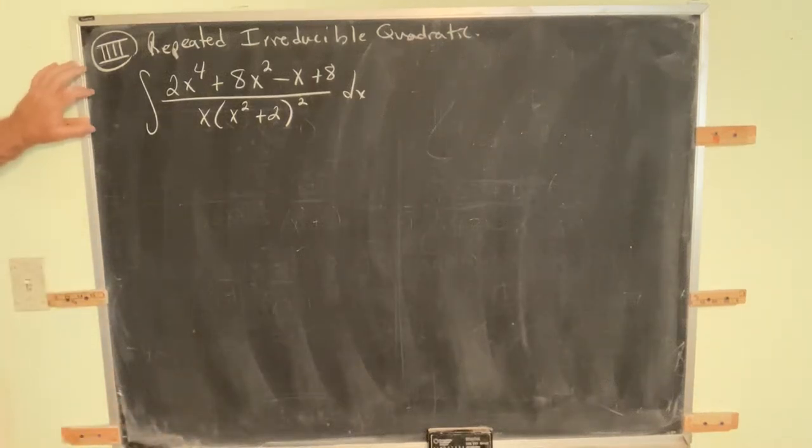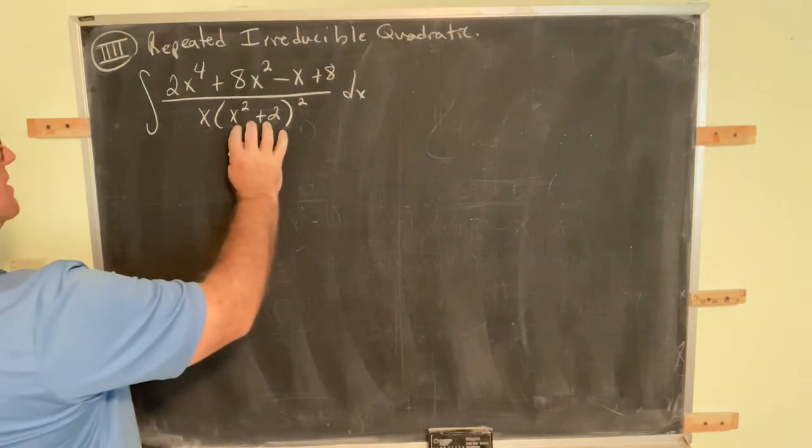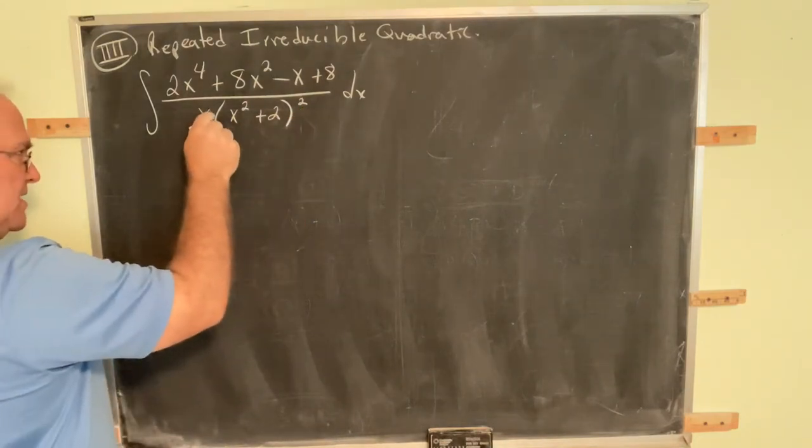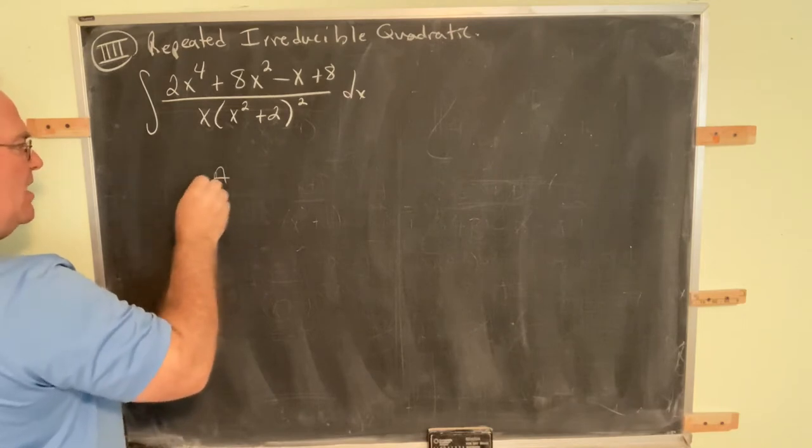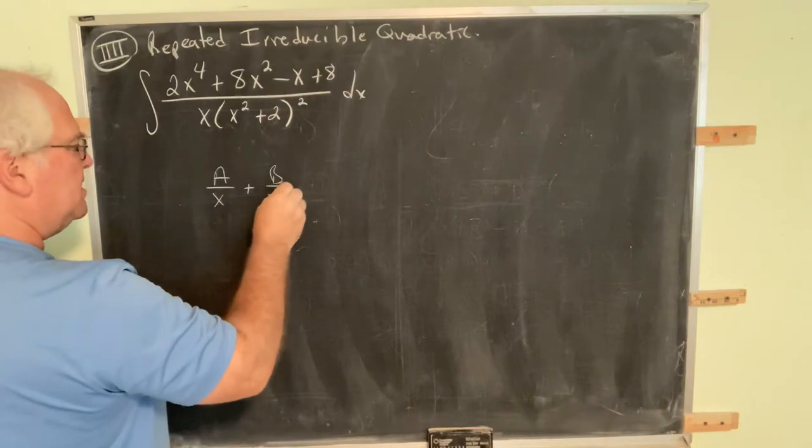The last and most monstrous of our categories, category 4, repeated irreducible quadratic. We have an irreducible quadratic - this does not factor - and it's been repeated. Recall, if this is x to the second, we would need to have an A over x to the first, and we would need to have a B over x to the second.